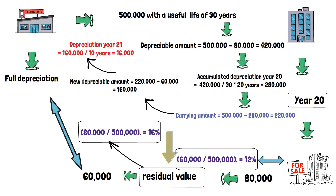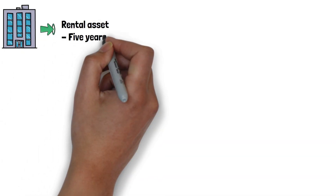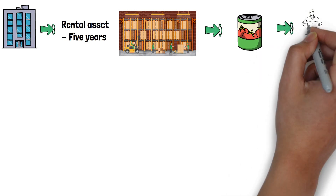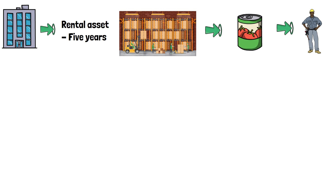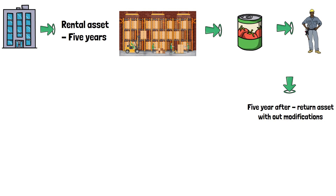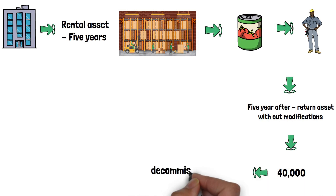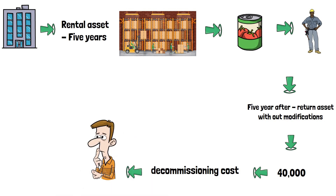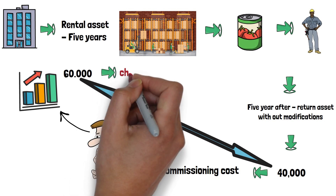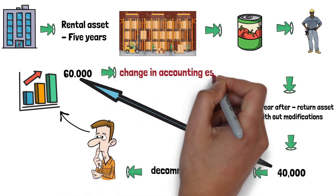Let's see another example with changes in accounting estimates. An entity leases a warehouse for 5 years to store perishable foods. Due to inventory characteristics, it is necessary to modify the warehouse interior to ensure the foods are in perfect condition. Both the lessor and lessee agree that once the lease agreement ends, it will be necessary to return the asset under the same conditions as at the agreement's beginning. The company estimates it must incur 40,000 to restore the warehouse once 5 years have passed. However, at the end of year 4, the company considers it necessary to modify its estimate because the prices of raw materials to restore the asset increased considerably. Therefore, management believes it will have to disburse 60,000 instead of 40,000. This is a change in accounting estimate because it results from new information received by the company.